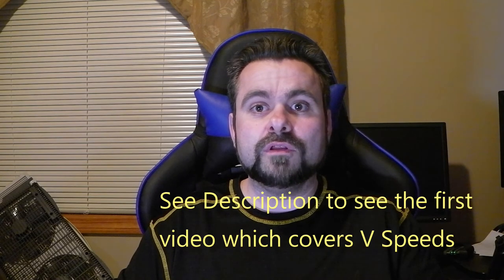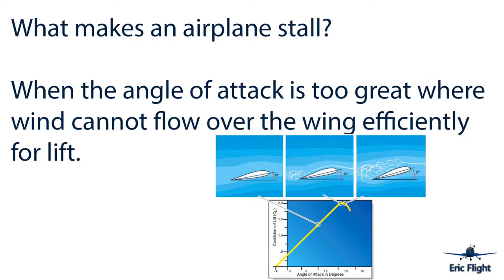Today's video deals with stalls. Basically what I'm doing is looking over the questions and seeing what they generally ask about, so we're going to cover all the questions that come next on the pre-solo written on stalls. The first question on the pre-solo exam about stalls is: what makes an airplane stall? The answer is when the angle of attack is too great where wind cannot flow over the wing efficiently for lift.